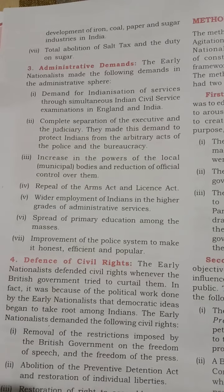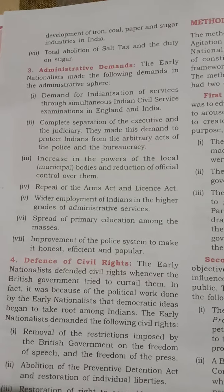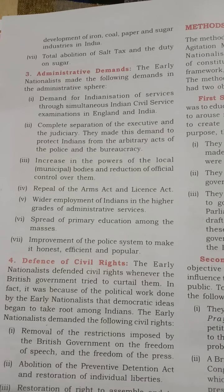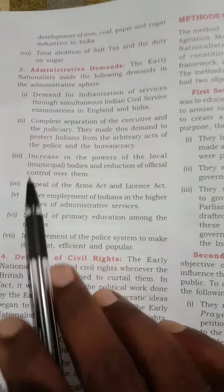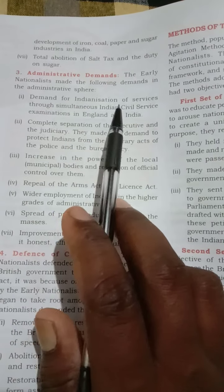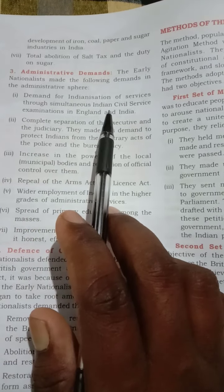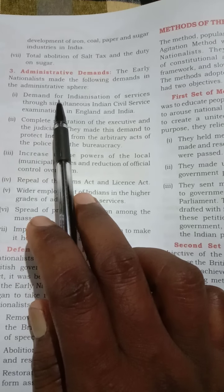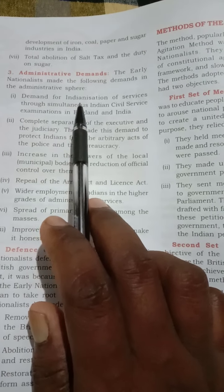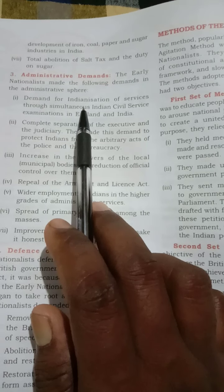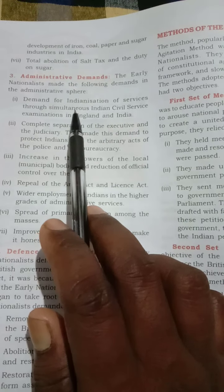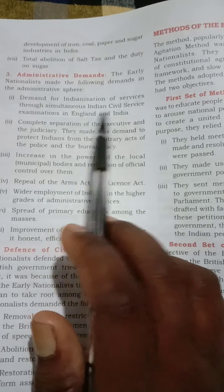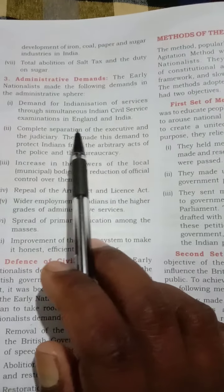Now let us go to the third point, that is administrative demands. What were the administrative demands made by the early nationalists to the British government? The first demand was for the Indianization of services through simultaneous exams in England and India. The early nationalists said that all government services should be Indianized, and the civil service exam should be held at the same time in both England and India.